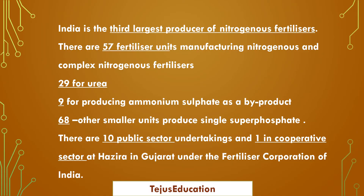There are 57 fertilizer units manufacturing nitrogenous and complex nitrogenous fertilizers — 29 for urea, 9 for ammonium sulfate. 68 smaller units are producing single super phosphate. There are 10 public sector (government) units and one cooperative sector unit at Hazira in Gujarat, under the Fertilizer Corporation of India.